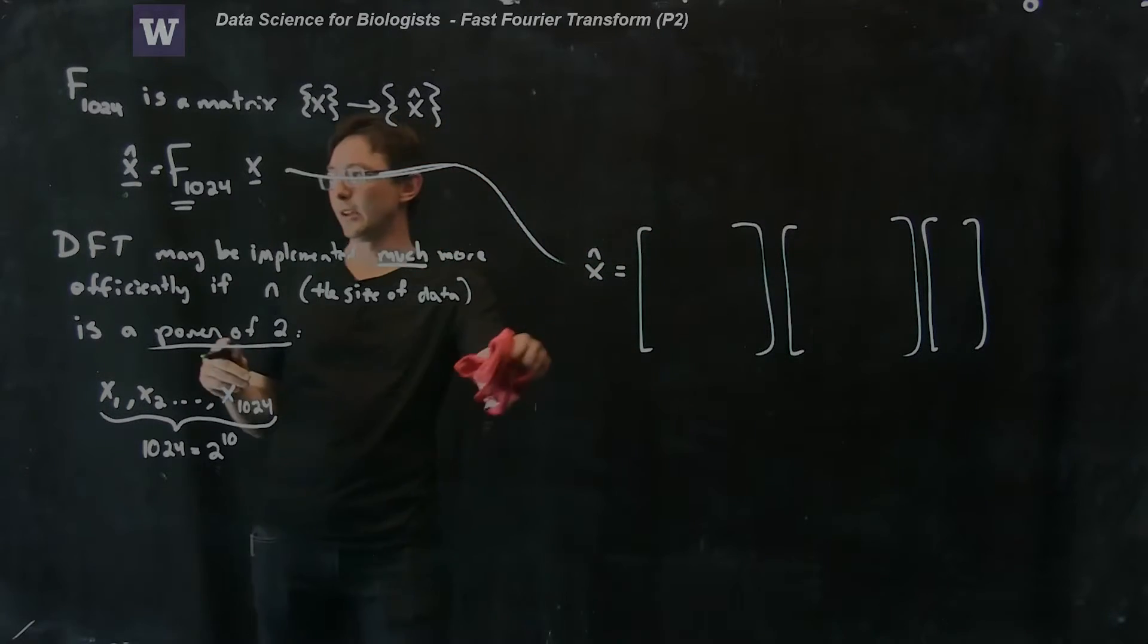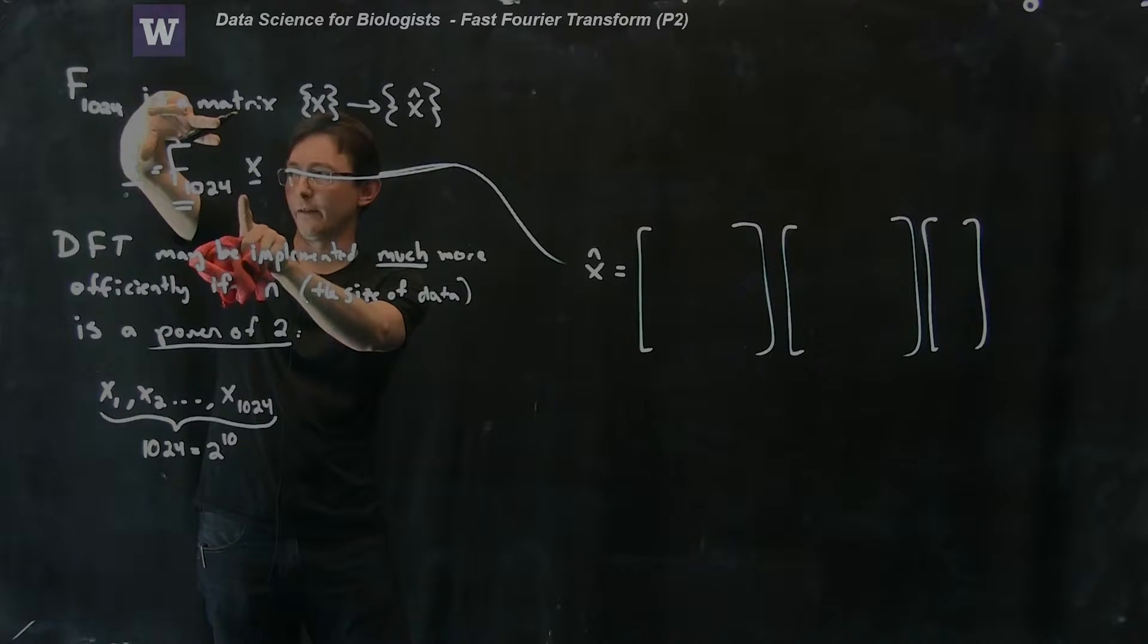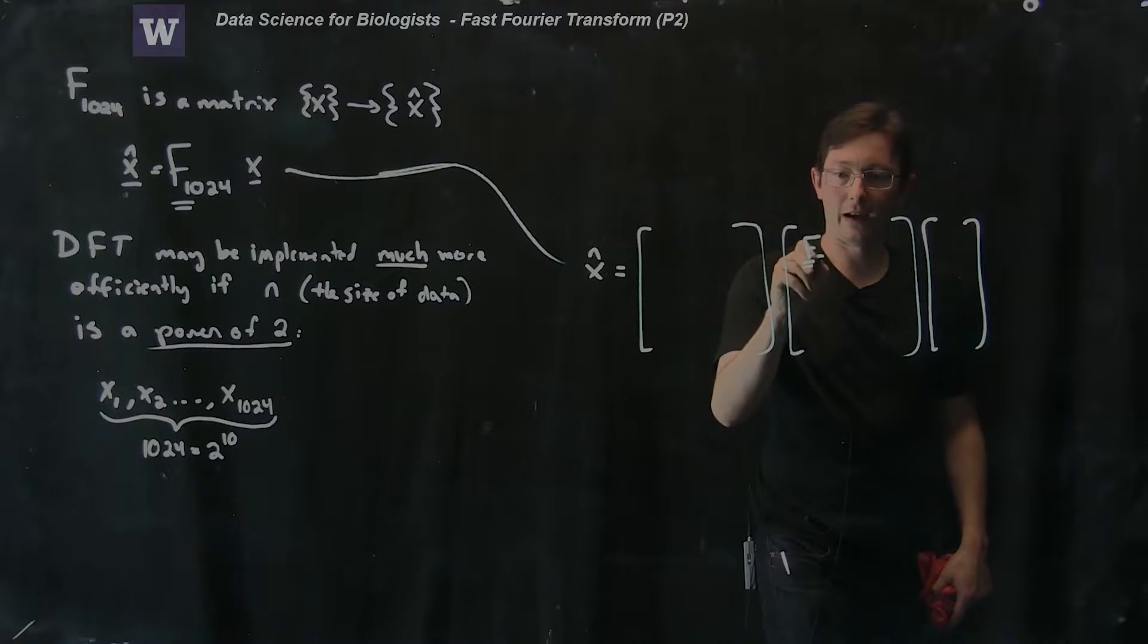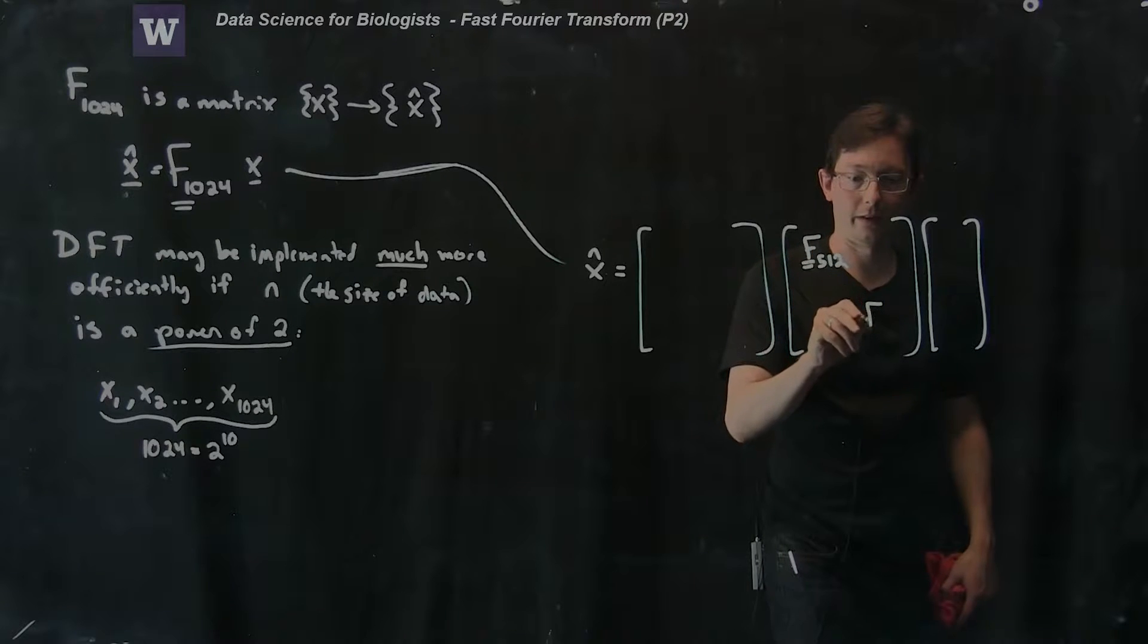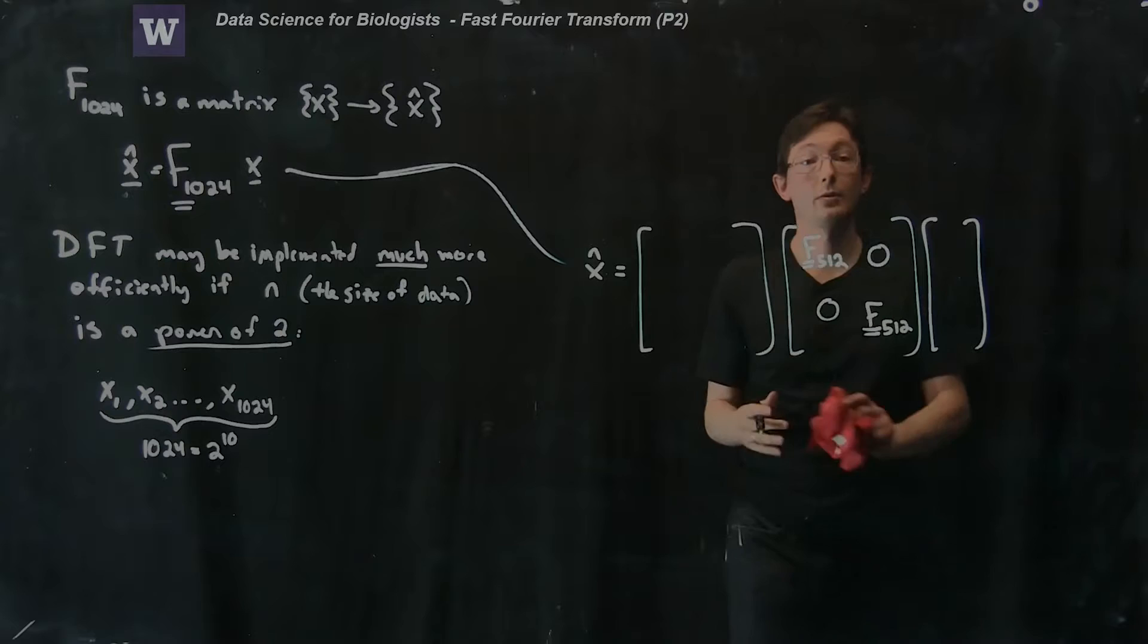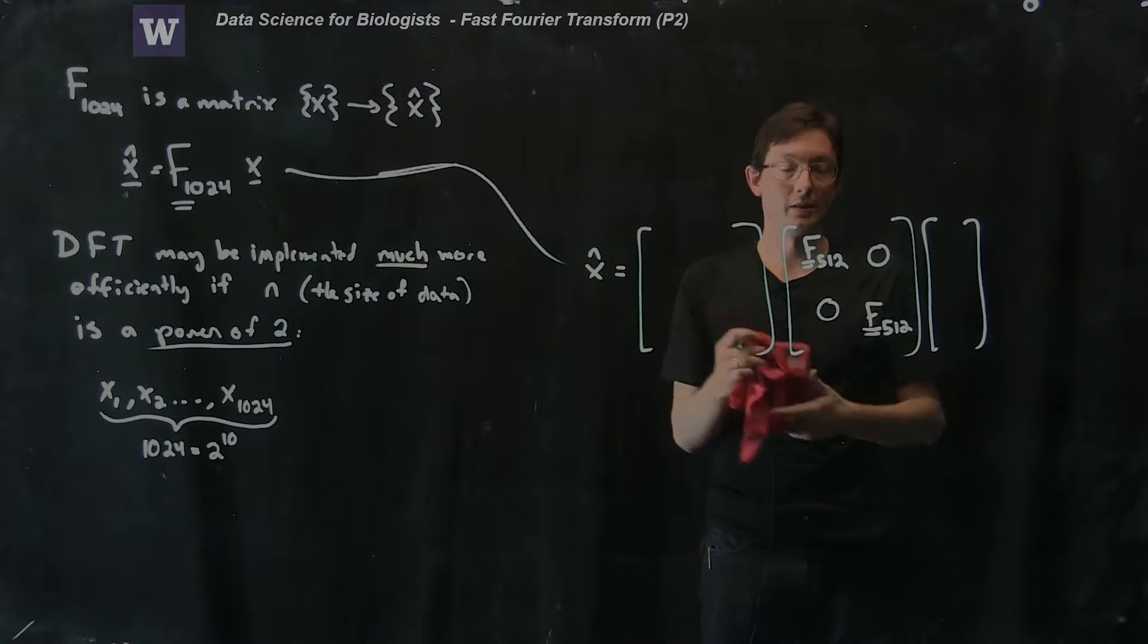What I'm going to do here is I'm going to break up this big F1024 into two sub-blocks of F512 and F512 with zeros everywhere else. Right away this is looking better because half of this matrix is zeros.